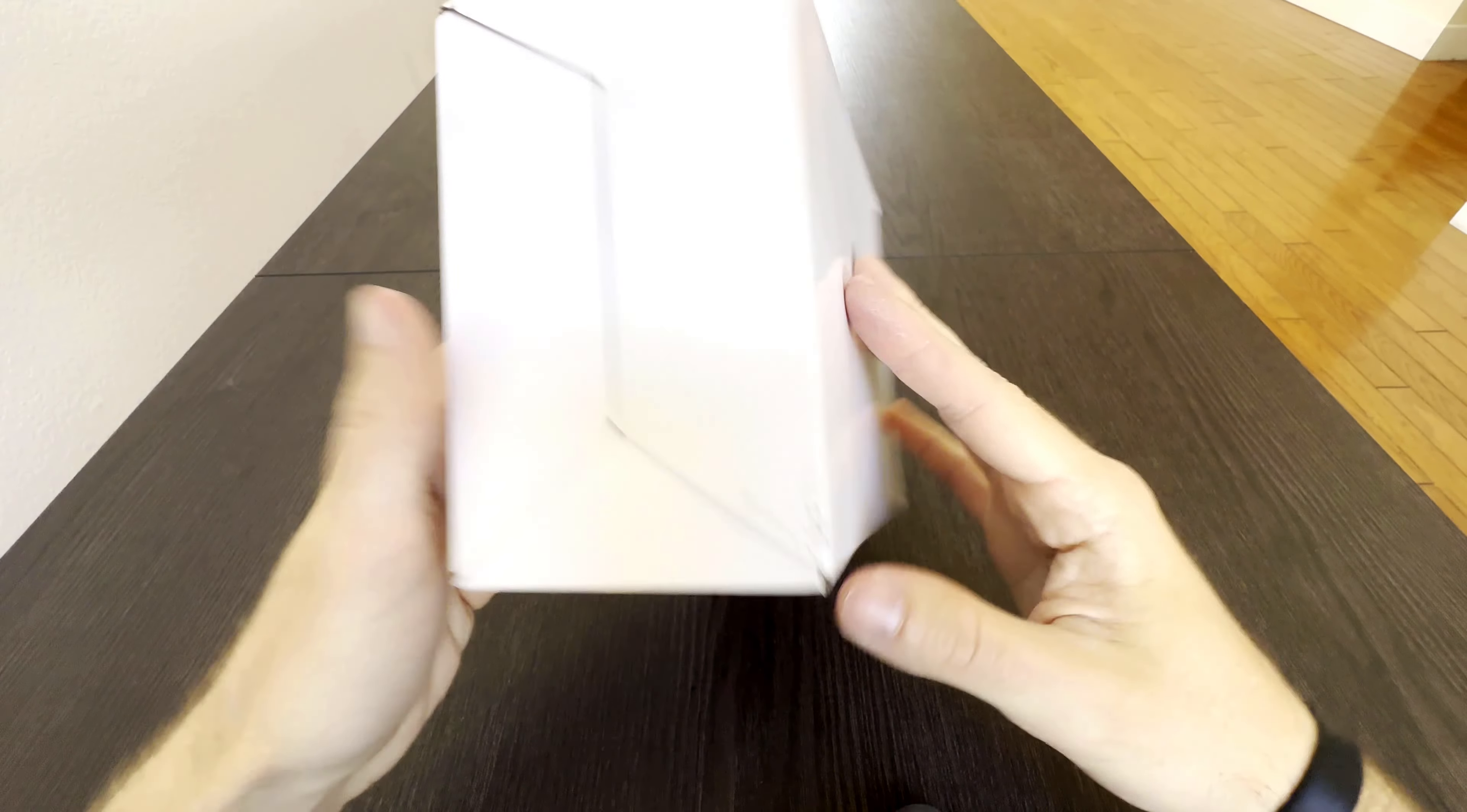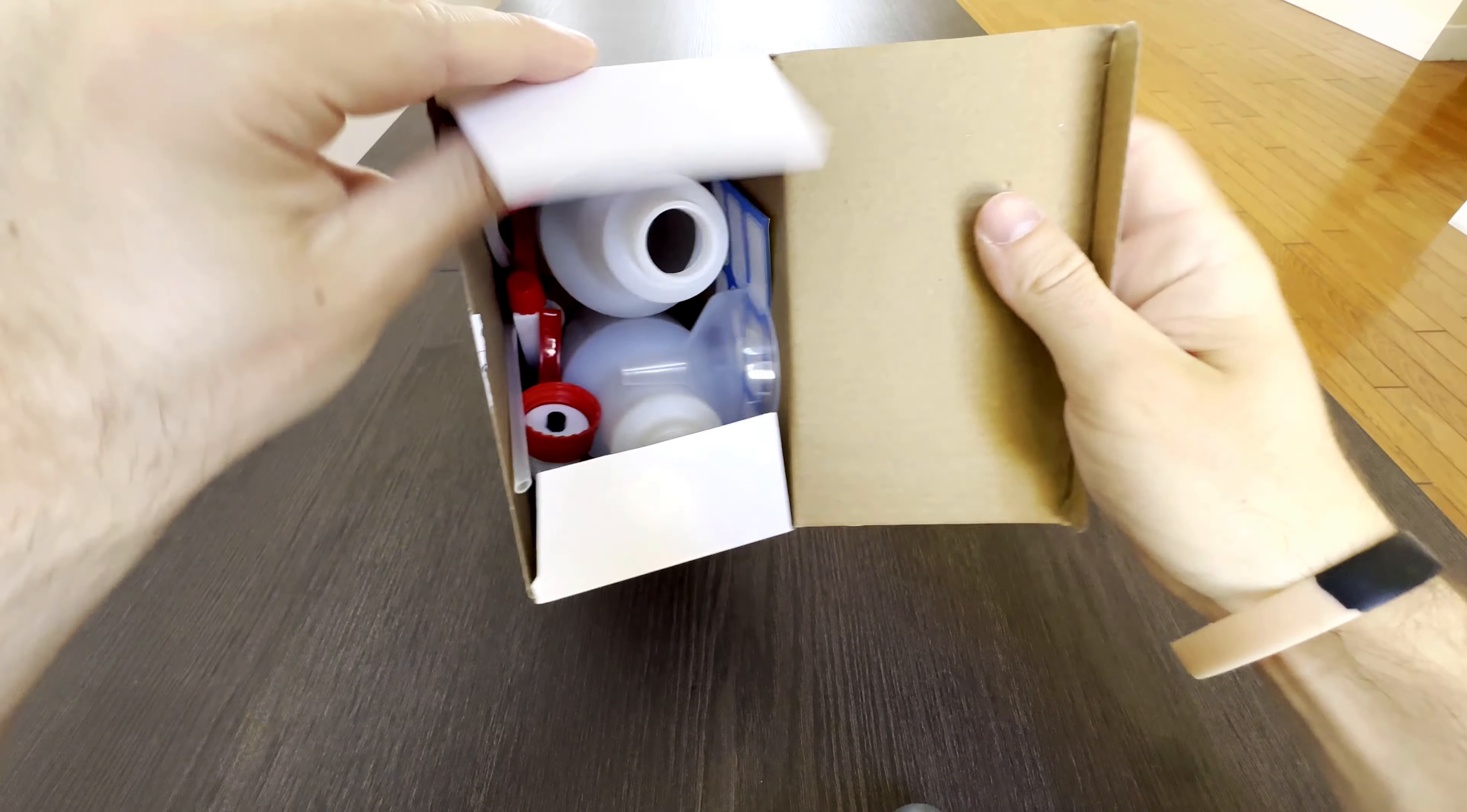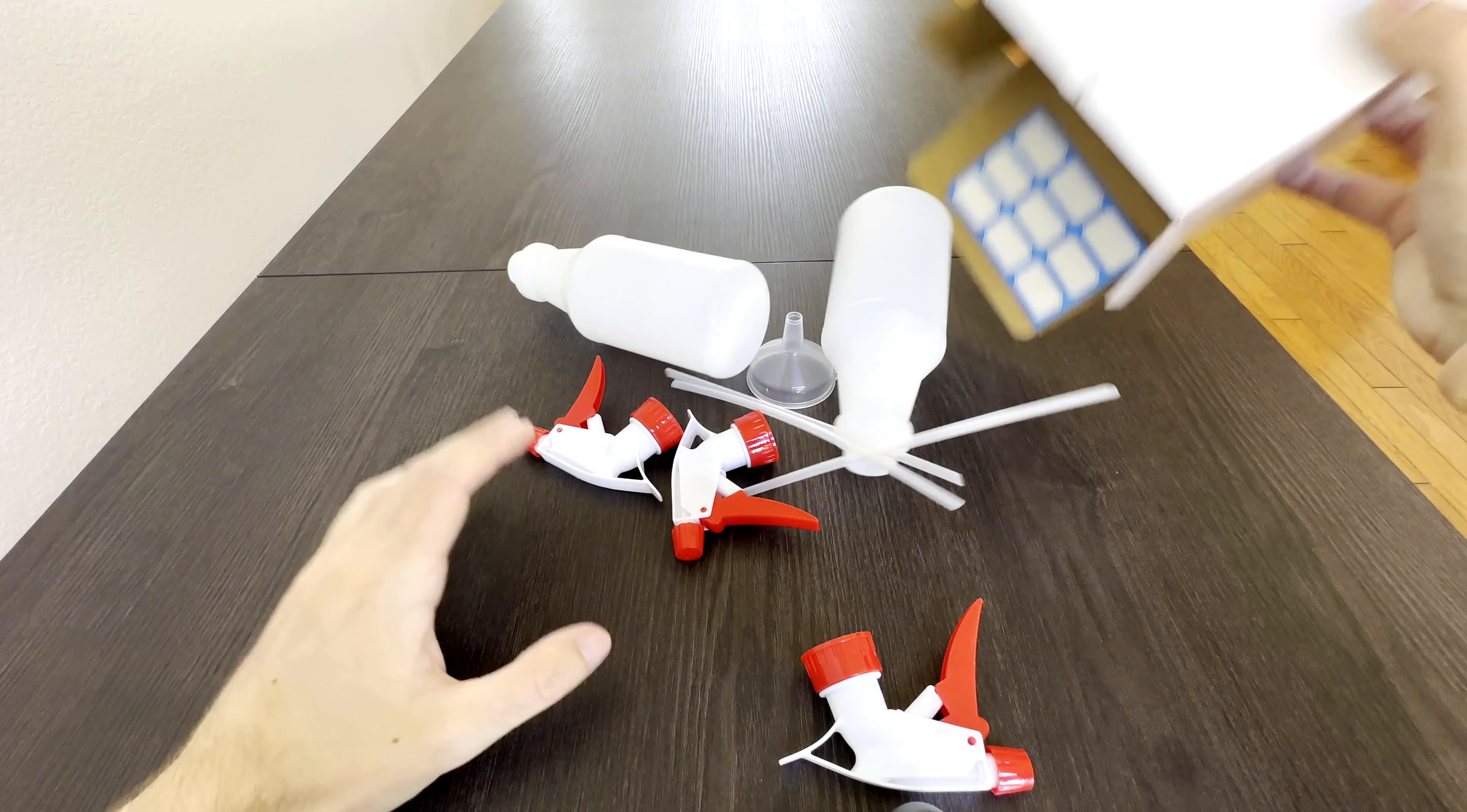These are 16-ounce leak-proof, clog-proof spray bottles intended for use with water, bleach, vinegar, alcohol, etc. They even advertised them for use with barbecue sauce, to each their own. It's recommended to hand wash only, and a fully assembled bottle weighs in at 3.8 ounces when empty. The listed dimensions are 7.75 x 4 x 3.5 inches.